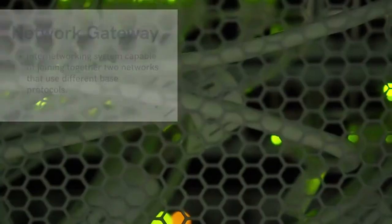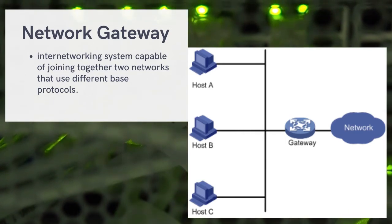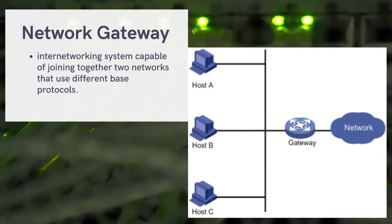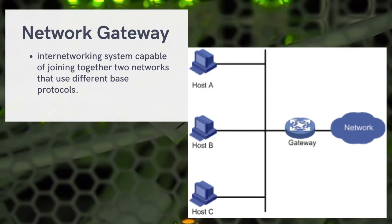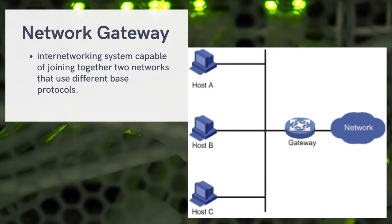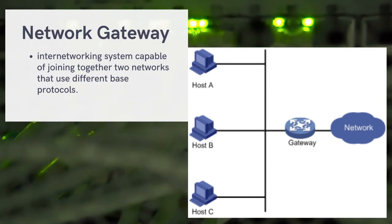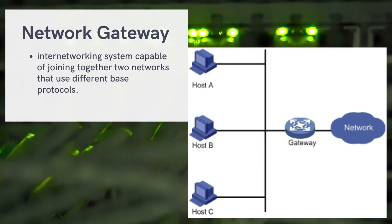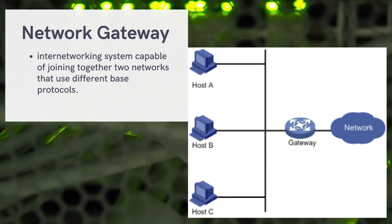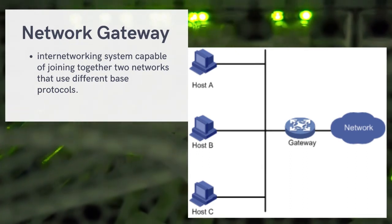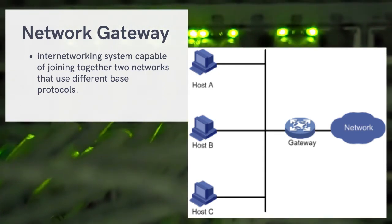Next is the network gateway. A network gateway is an internetworking system capable of joining together two networks that use different base protocols. The internet works by having your network connect to other networks. If two networks have different configurations or protocols, they normally cannot communicate — but because of the network gateway, connection is possible.